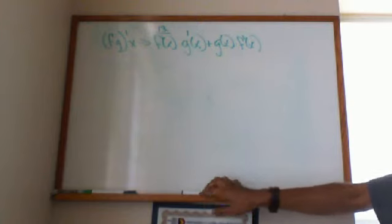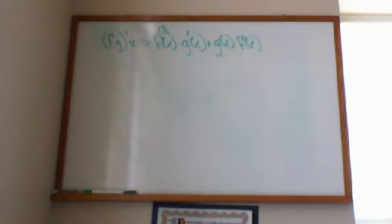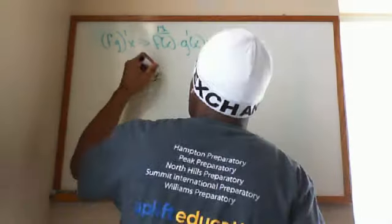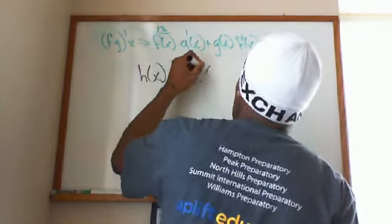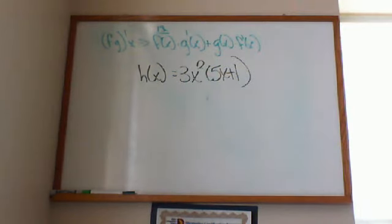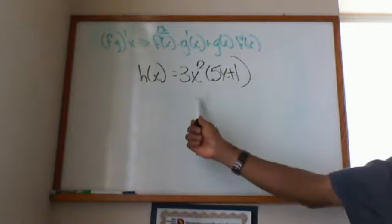An example of such would be a problem like this where I have H of x equals 3x squared times 5x plus 1. Now there is another way to do this derivative—it's called the chain rule. But you don't know that yet. We're gonna get there sooner or later, but right now I want you to pay attention to what we got for the product rule. So the first function is 3x squared.